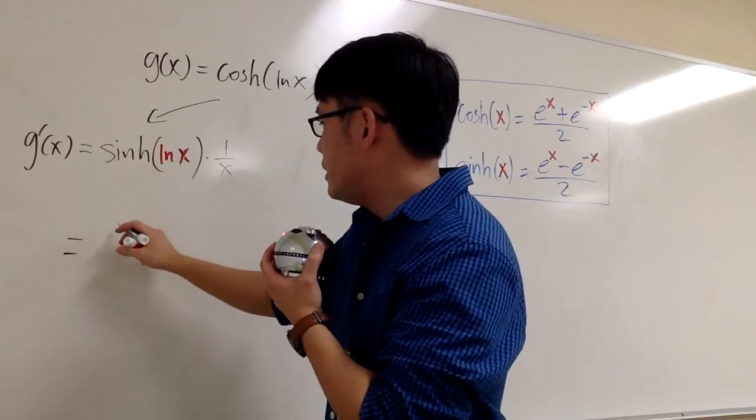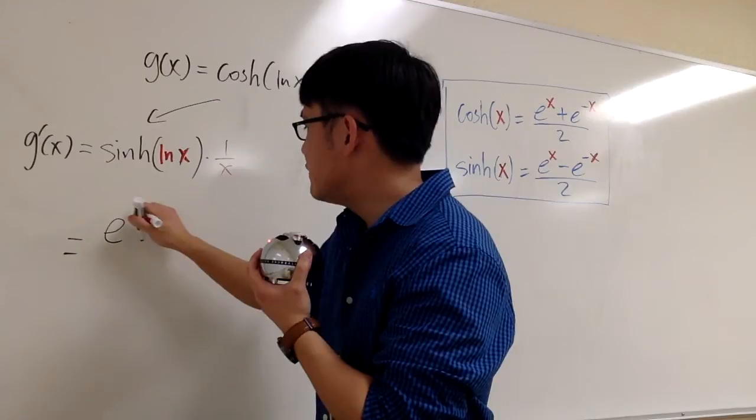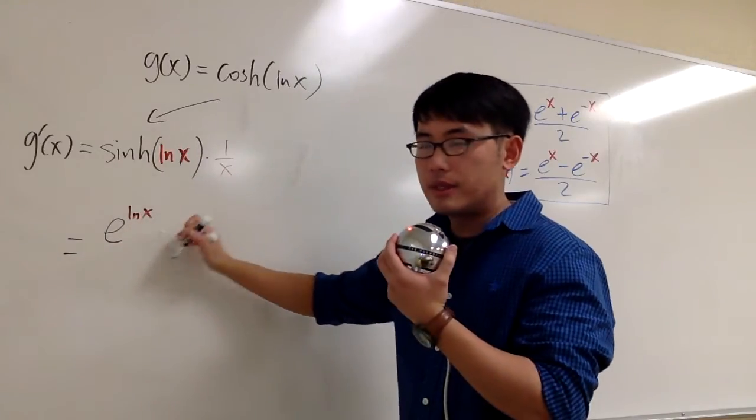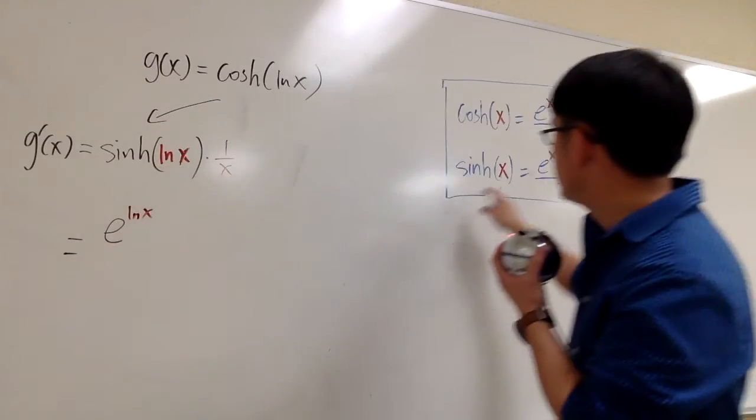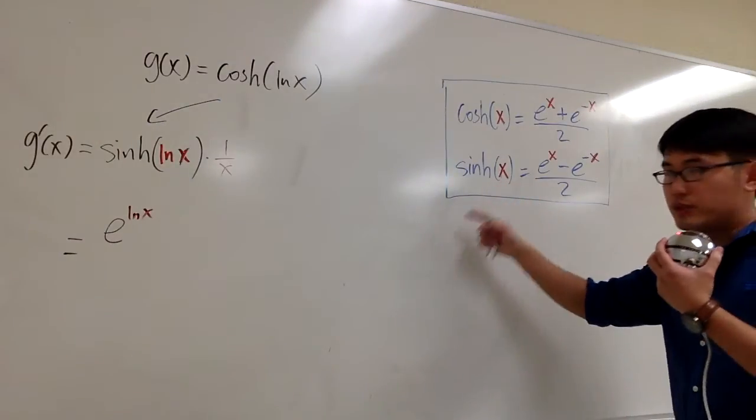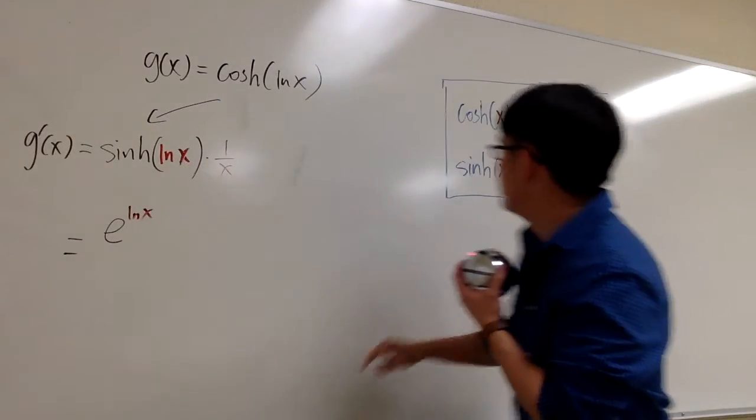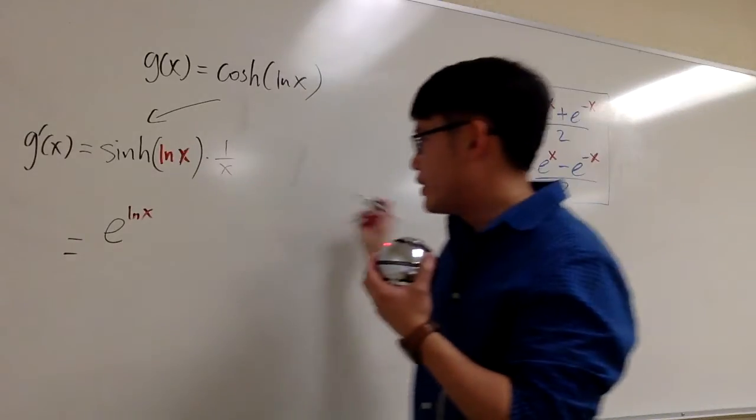This part is going to give me e to the positive input, which is e to the ln x. The ln x, it's like my red x right here. And I'm just doing the substitution. ln x into all this red x.